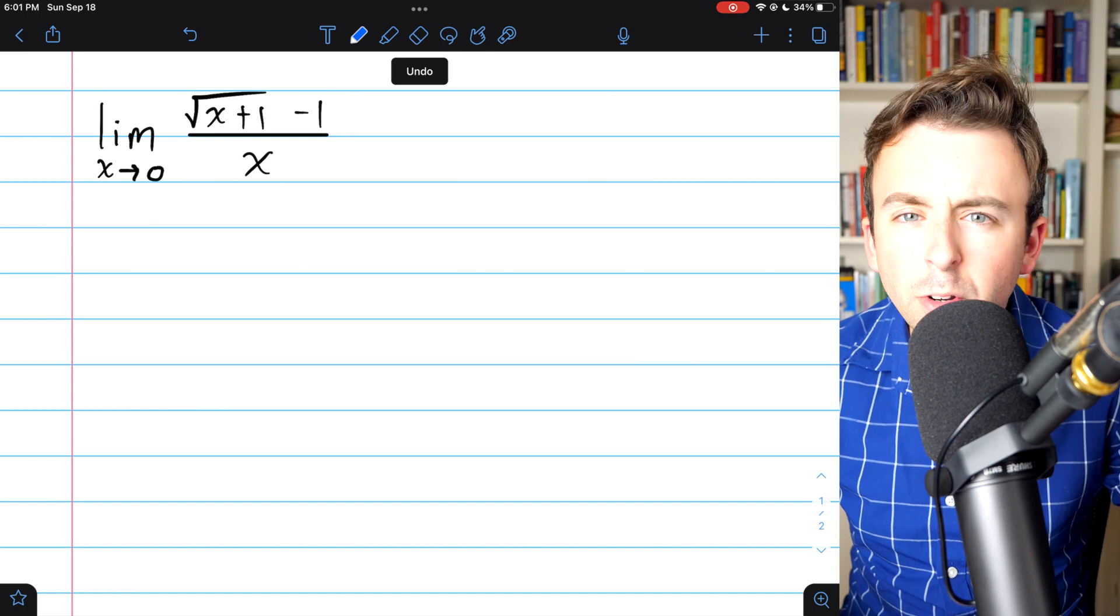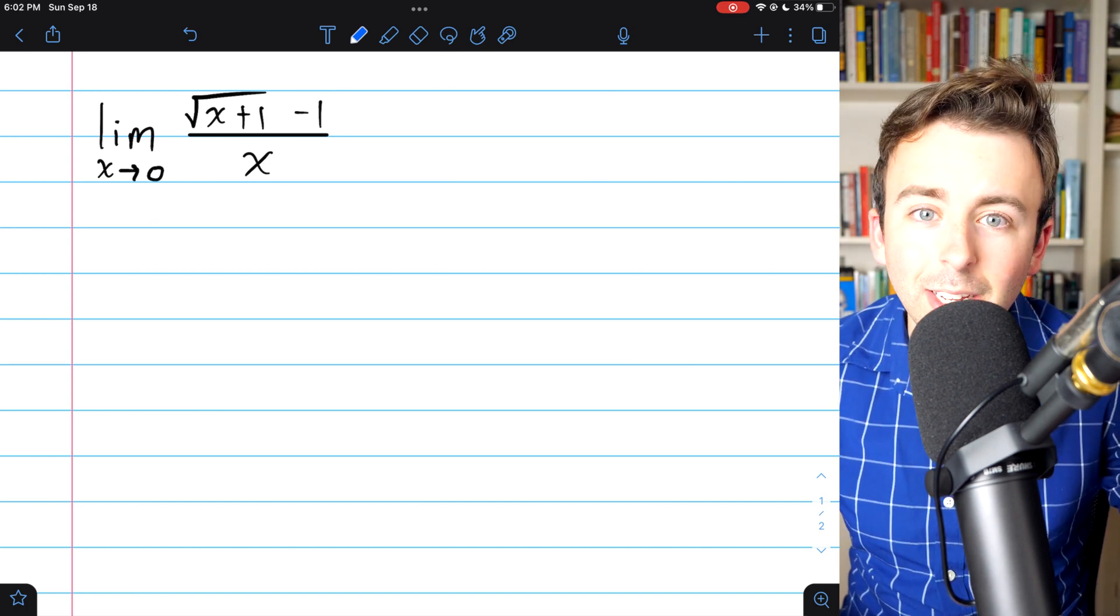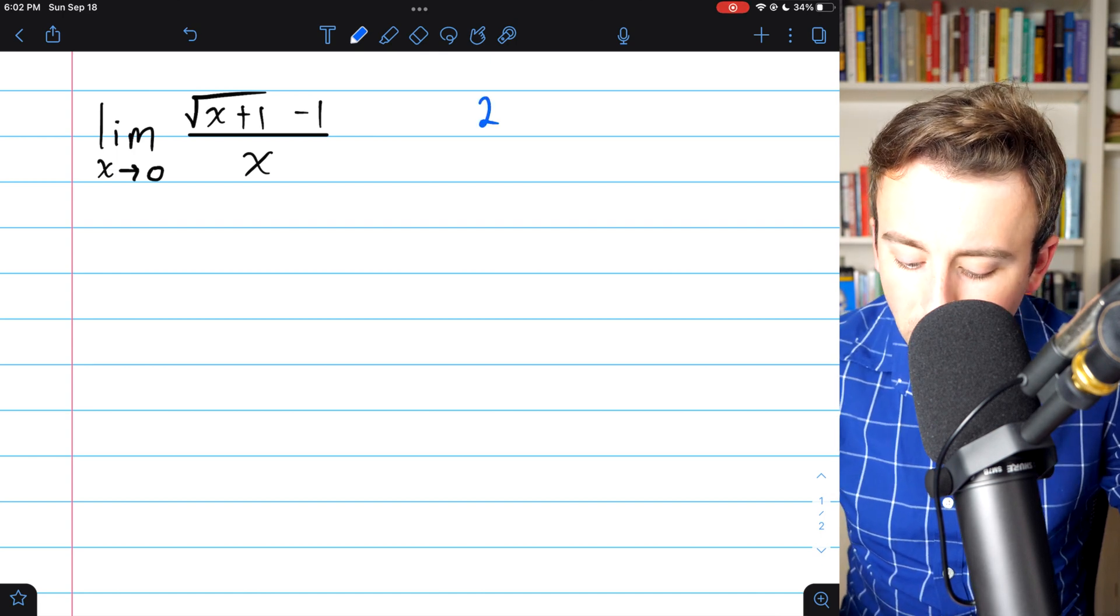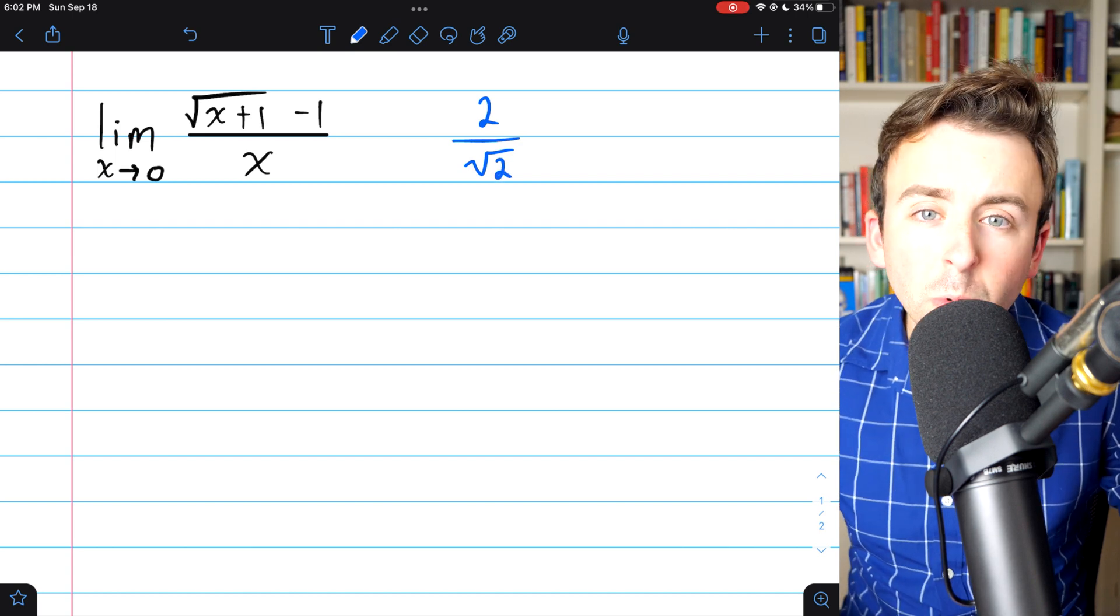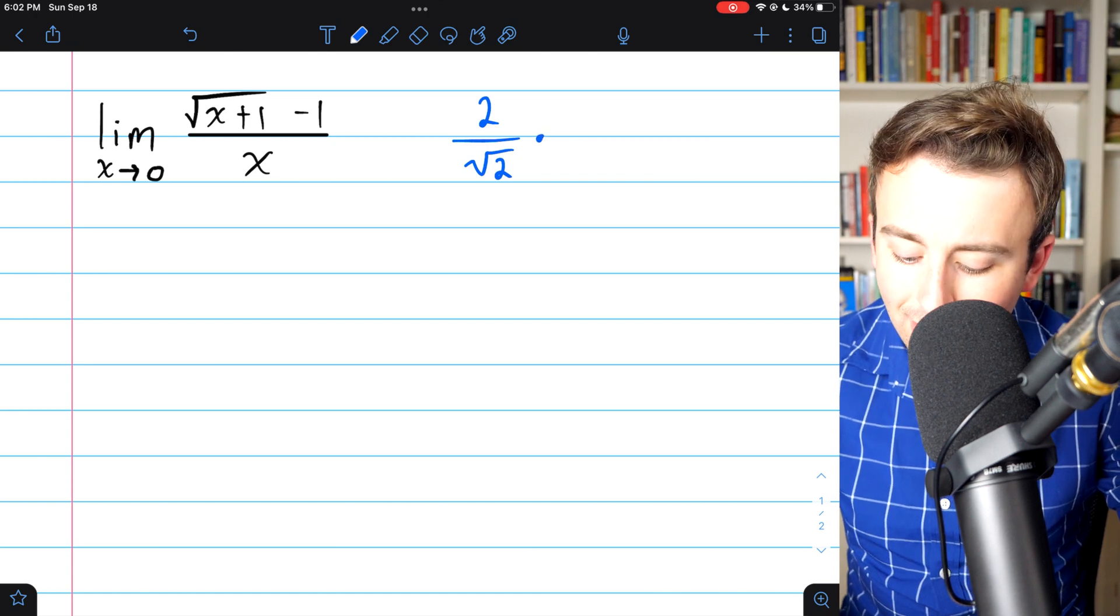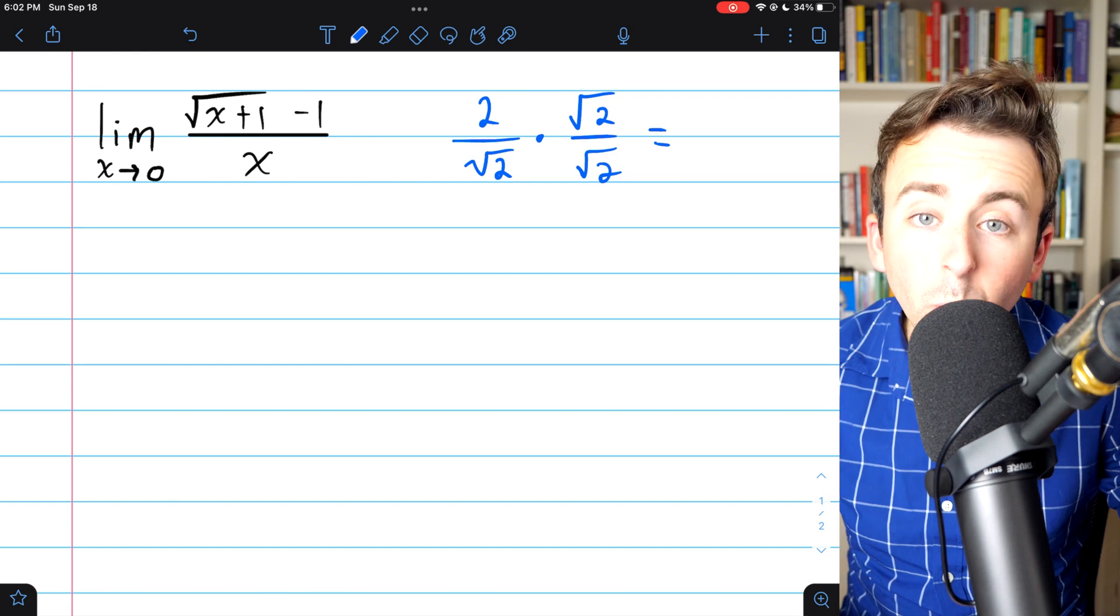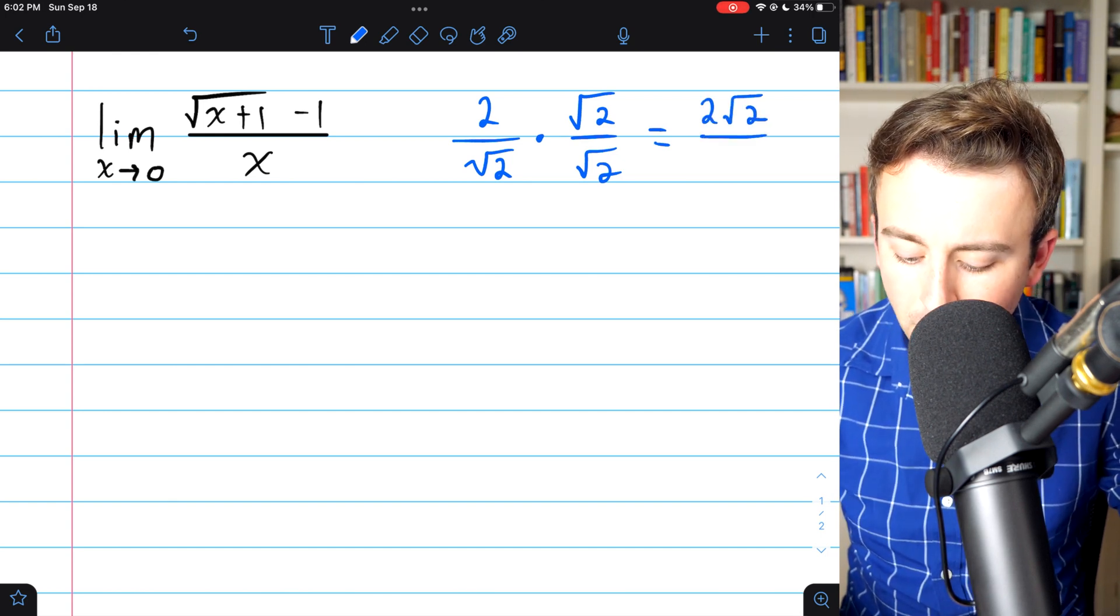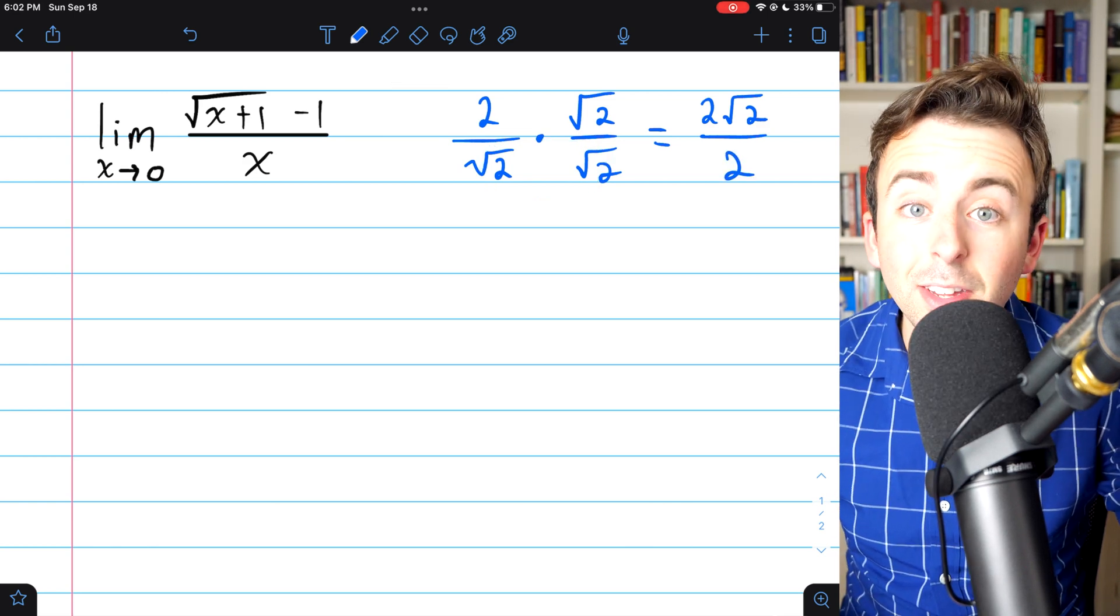Now quickly, if you don't remember what rationalizing is, in general, it just means getting rid of a root or a radical. So if we had an expression like 2 divided by the square root of 2, generally we try to keep radicals out of the denominator. The way we would rationalize this would be to multiply by root 2 over root 2. When we do that, we end up with 2 root 2 in the numerator, and then the radicals go away in the denominator. We're just left with 2.